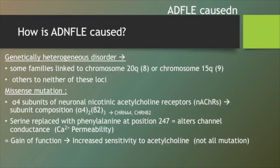Because it is a genetically heterogeneous disorder, for some families it is linked to chromosome 20 or chromosome 15, and for others neither of these. In autosomal dominant nocturnal frontal lobe epilepsy there is a missense mutation present in the alpha 4 subunits of neuronal nicotinic acetylcholine receptors.